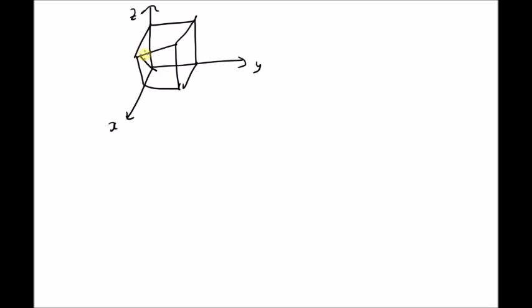So vector a is this one and vector b is this one. The coordinates of vector a can be defined as 1 times x hat plus 0 times y hat plus 1 times z hat.